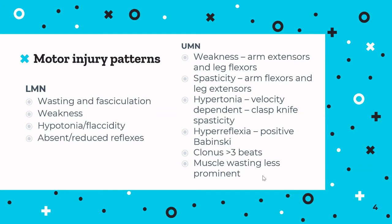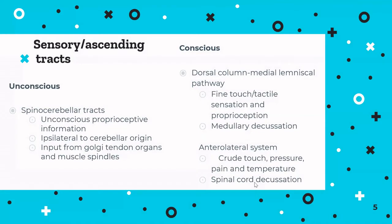You also get a positive Babinski sign — running a finger along the sole of the foot causes the toes to splay — and clonus of at least three beats. There will be some muscle wasting because they can't use those muscles as much, but it's not due to lack of nervous supply.